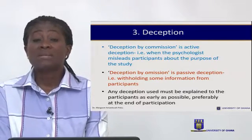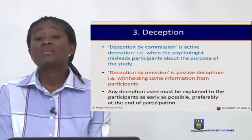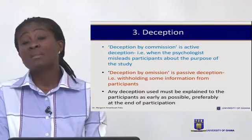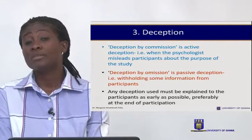We can have deception by commission — or active deception — where the psychologist misleads participants about the hypothesis of the study. We can also have deception by omission, where you withhold certain vital information about the research. But once the study is over, you have to tell the participants that you used deception and explain to them the reason why.